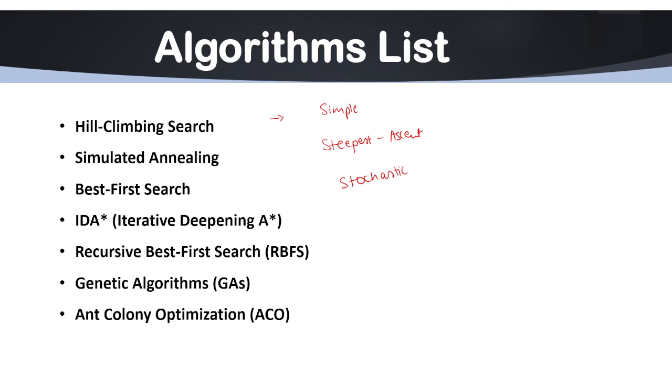Simple hill climbing evaluates one neighbor at a time and moves if it's better; otherwise it stops. For example, finding the highest point on a terrain map. Steepest ascent hill climbing evaluates all neighbors and moves to the best. Stochastic hill climbing randomly selects a neighbor to evaluate, reducing the risk of getting stuck in local maxima.